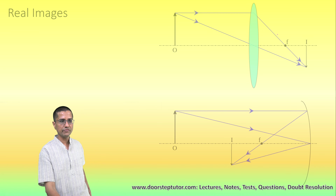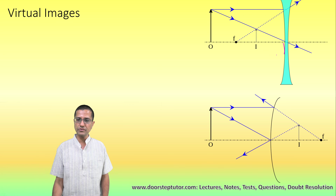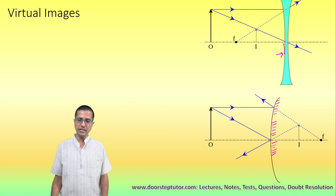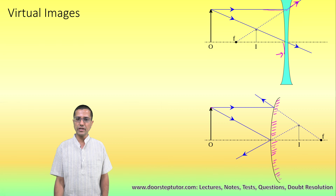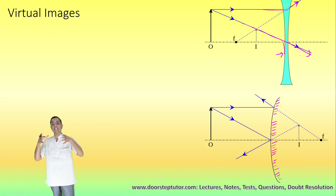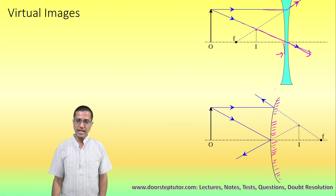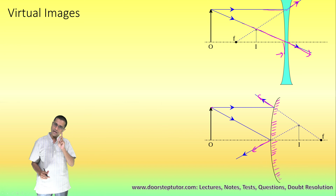Now let us look at the virtual image. This is a concave lens — there is a cave here — and a convex mirror. We have interchanged the lens and the mirror. If I place an object in both of these cases, the real photons in the case of the concave lens diverge — they are not meeting, they will not physically collide. The same thing happens with the convex mirror: the real photons diverge.